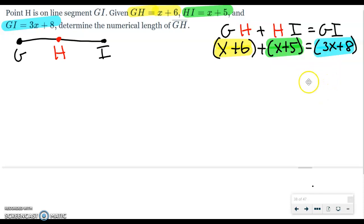The first thing I'm going to do is combine like terms on one side of the equation. I'm taking my X's. I've got one X, I've got another X, now I have two X's. Take the 6, the 5. Positive 6, positive 5. Add them together, I get positive 11. And I'm bringing down the 3X plus 8.